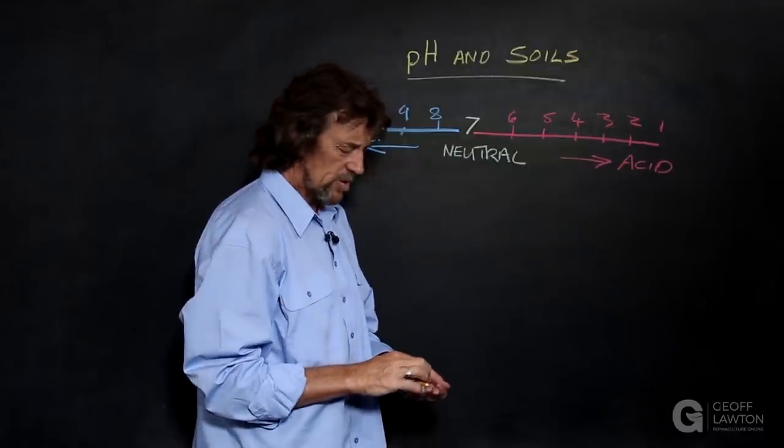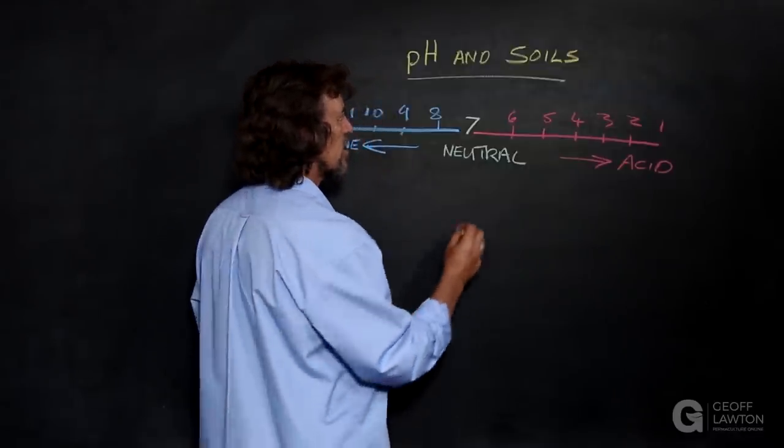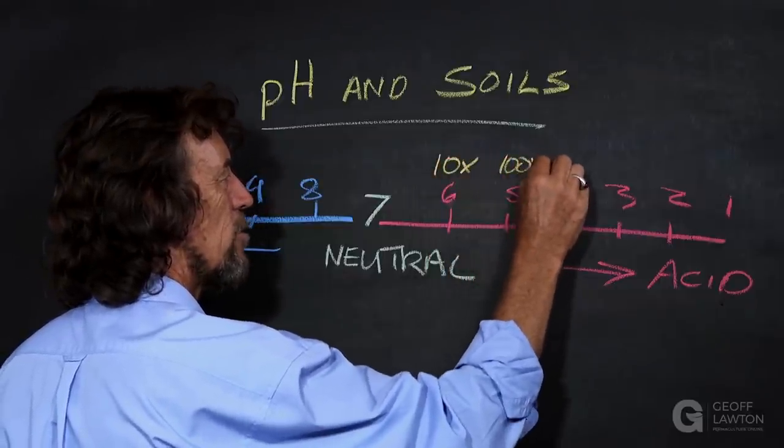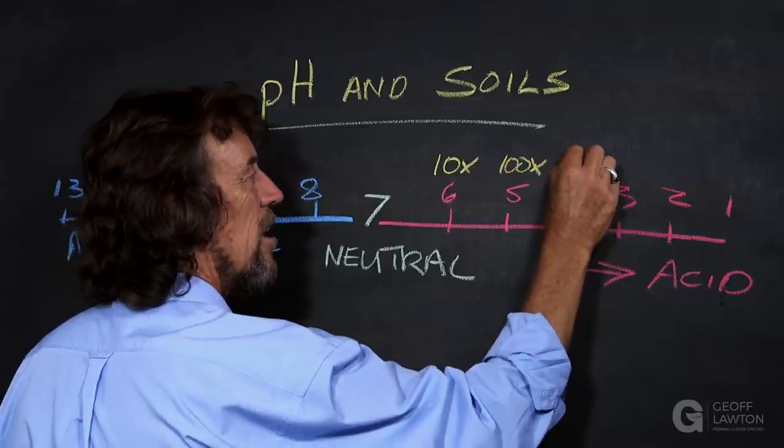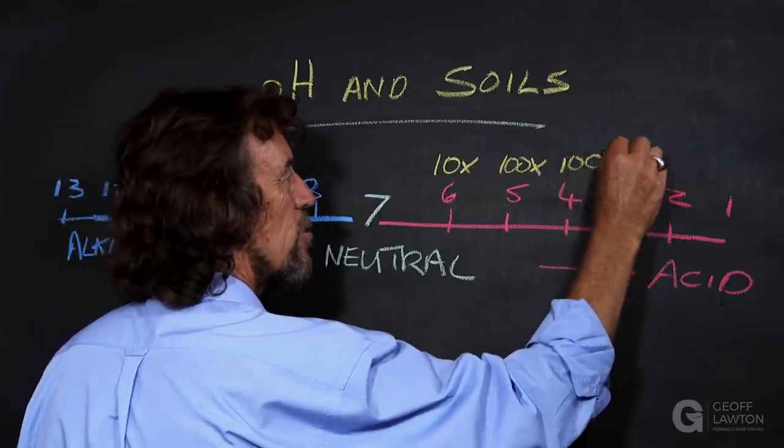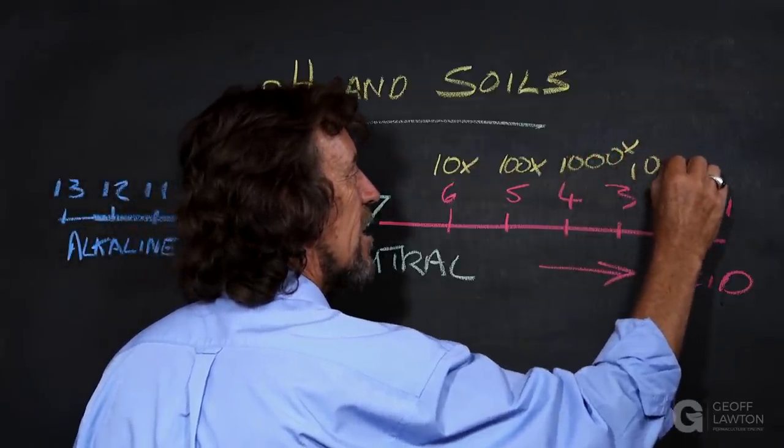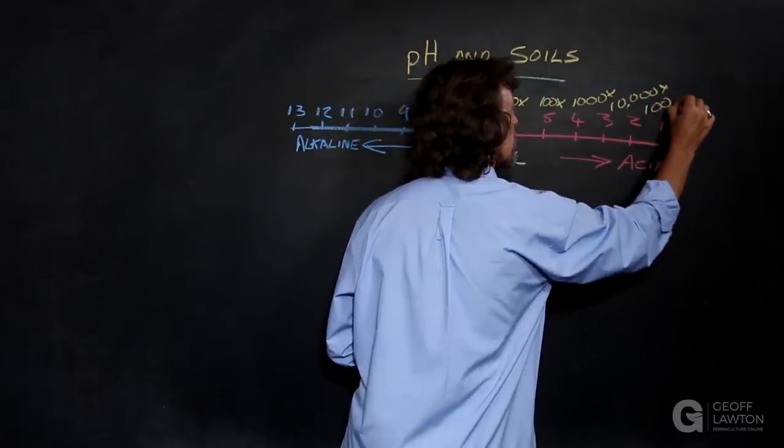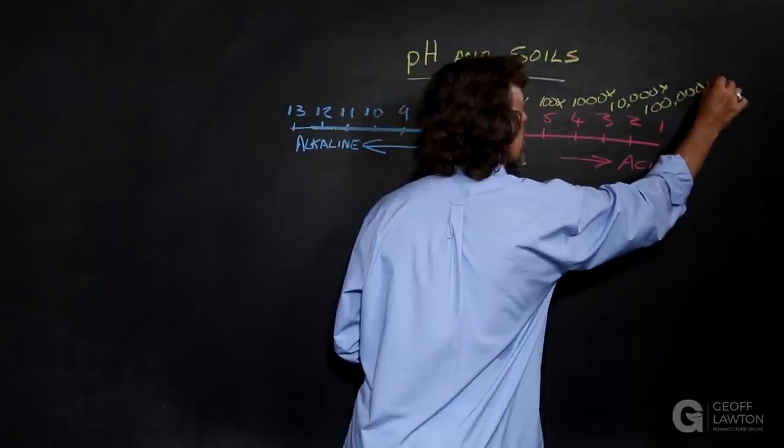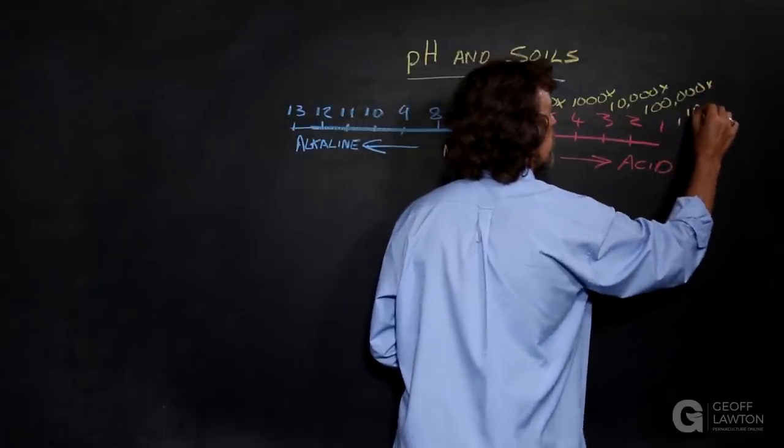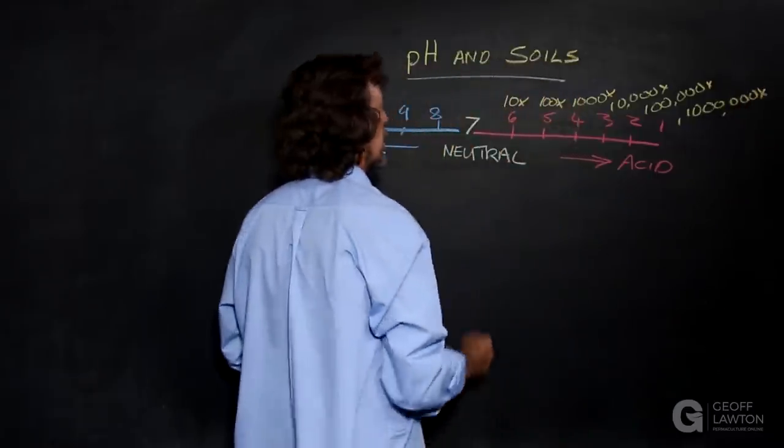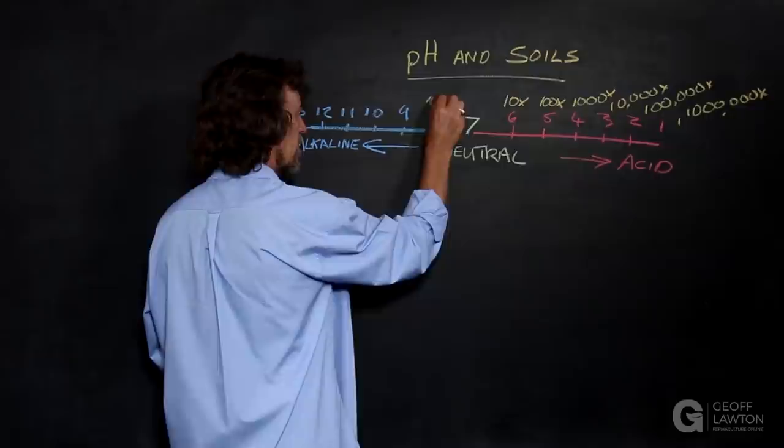But what is unusual about the pH scale is, being logarithmic, this is ten times more acid, a hundred times more acid, a thousand times more acid, a hundred thousand times more acid, and one million times more acid.